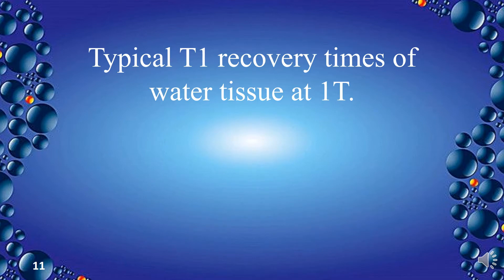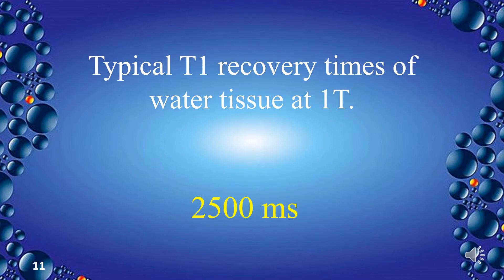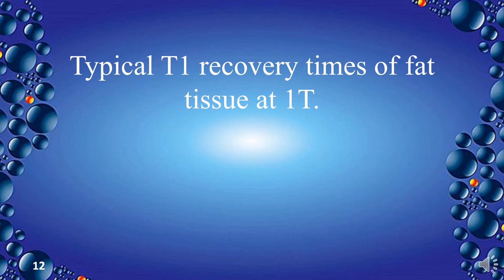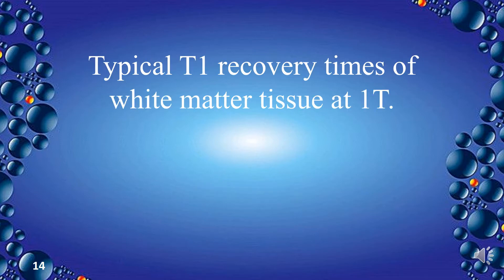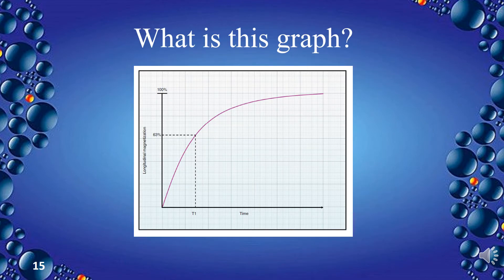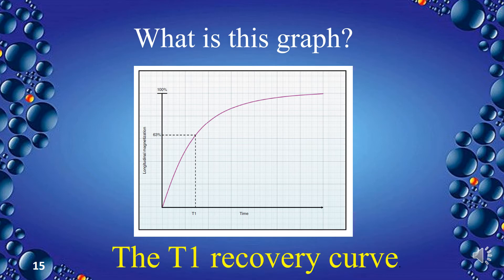What are the typical T1 recovery times of water tissue at 1 Tesla? 2,500 milliseconds. What are the typical T1 recovery times of fat tissue at 1T? 200 milliseconds. What are the typical T1 recovery times of white matter tissue at 1T? 500 milliseconds. This graph represents the T1 recovery curve.